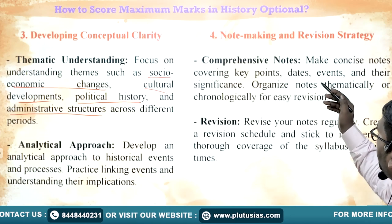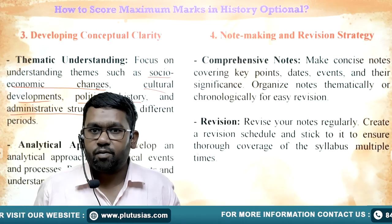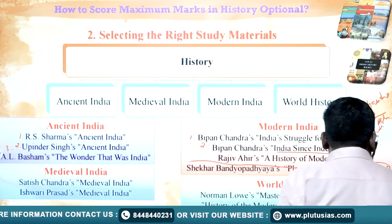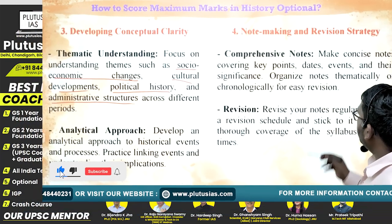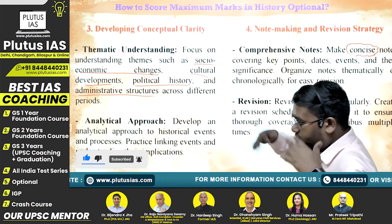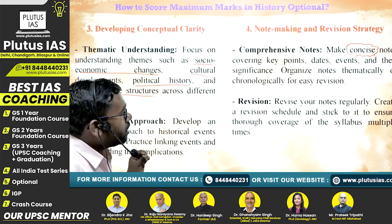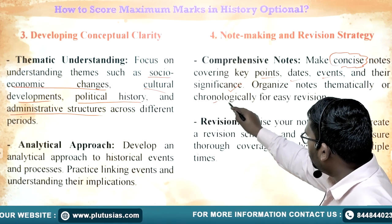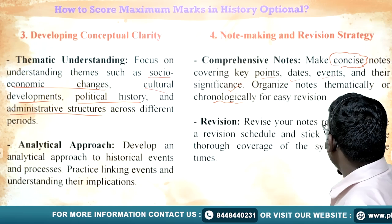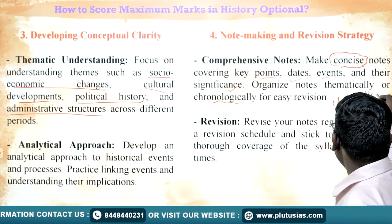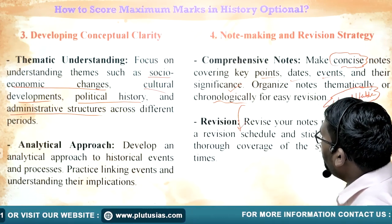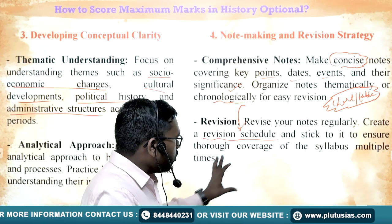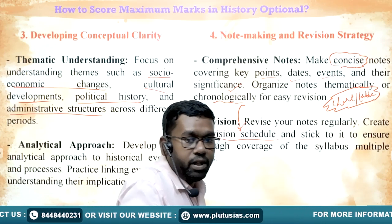In the fourth stage, we should have a note-making and revision strategy. We should make concise notes — not 10 or 15 books worth of notes, but concise notes made through key points, dates, events, and their significance. Notes should be organized thematically or chronologically for easy revision. We can make charts and tables as important elements in our notes to help remember and revise themes. We should revise our notes regularly and create a revision schedule, sticking to it to ensure thorough coverage of the syllabus multiple times.